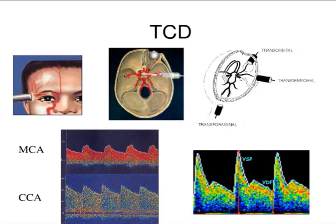Here's an example of vasospasm, which is narrowing of the blood vessels in the proximal MCA — middle cerebral artery territories — causing this high systolic peak to the waveform.